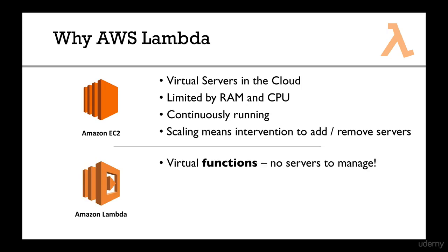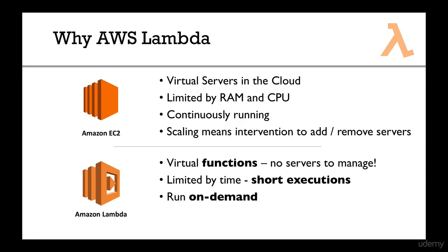AWS Lambda is: instead of servers, you have virtual functions. That means you don't have any servers to manage — you just manage your functions, which is what your application does. Instead of being limited by RAM and CPU, you're mostly limited by time, meaning your functions need to have very short executions — think of an API, not a job that lasts one hour. You run them on demand, meaning if no one is using your Lambda function, you don't get charged for it. And if someone is using it, you don't get billed by the hour — you get billed by the 100 milliseconds.